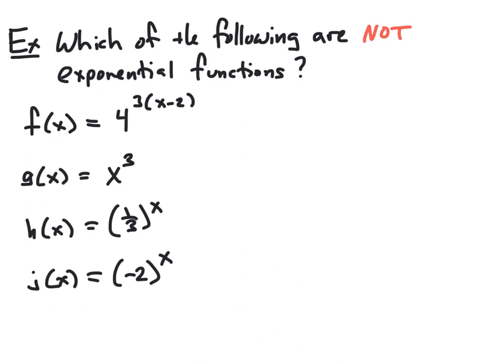The first one, f of x equals 4 to the 3 times the quantity x minus 2 power, doesn't immediately look like the a times b to the x form. However, by playing around with properties of exponents, we could easily write this in that form. We have a number 4 as our base raised to a linear power of x, and this could be rearranged into the appropriate form. So this first one will actually be exponential, even though it doesn't exactly meet our criteria as written.